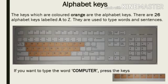The keys which are colored orange are the alphabet keys. There are 26 alphabet keys labeled A to Z on the keyboard. They are used to type words and sentences. For example, if you want to type the word 'computer', press the corresponding keys.